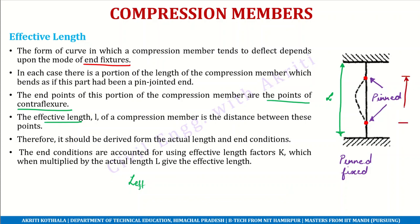You can see that the actual length is more, but the effective length is less. Why is it less? Because this particular column has fixed support at both ends. The points of contraflexure do not occur at the supports — there is extra material beyond those points. We don't consider that extra material in the effective length. Therefore, the effective length should be derived from the actual length and the end conditions.